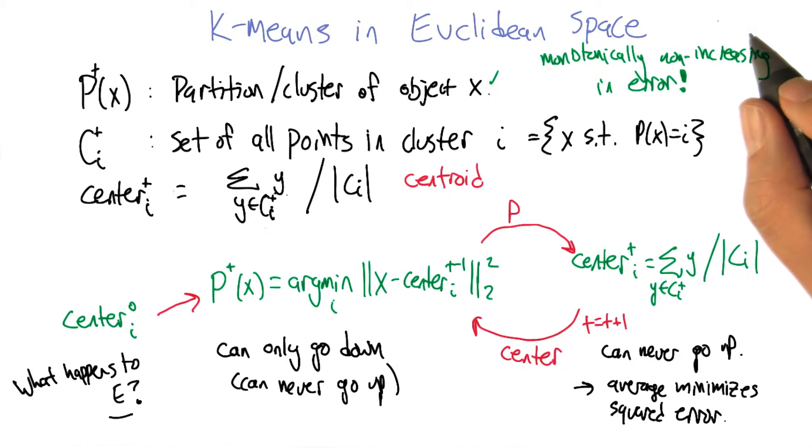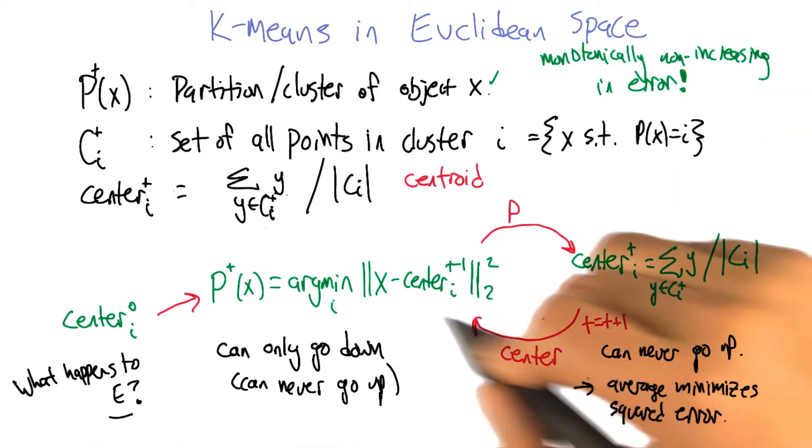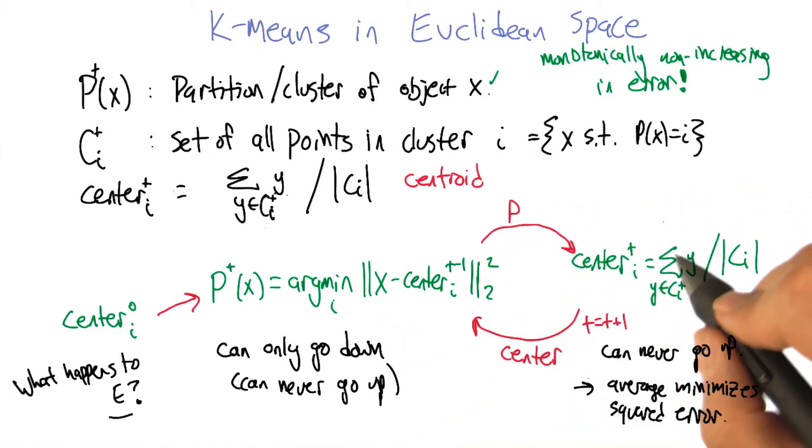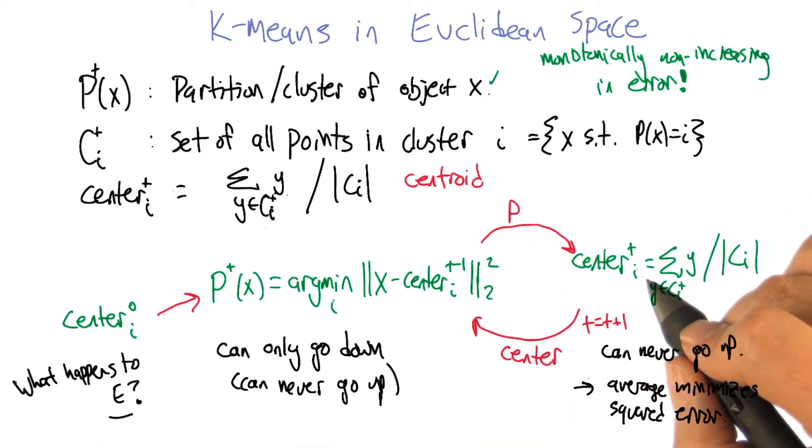Right. So even though it's an infinite space, as we're tick tocking back and forth, if we don't move the partitions, then the centers are going to be where they were. So the centers are quite constrained even though it's continuous. Right.